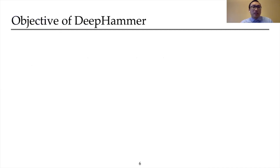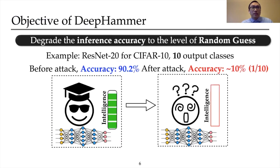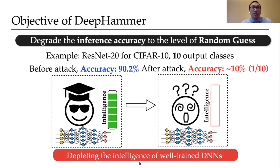Before we dig into the attack details, let me present the definition of the attacker's objective. We focus on an attack with a very aggressive goal: degrading the inference accuracy of a victim DNN model to the level of random guess. For example, for ResNet-20 trained on CIFAR-10 with 10 output classes, the inference accuracy before attack is 92%. We regard the attack as successful if after the attack the inference accuracy drops to about 10%. In other words, the proposed attack aims to deplete the intelligence of deep neural networks.